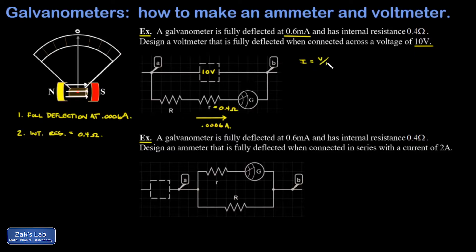I would end up with I equals V over R, just using Ohm's law, 10 volts over 0.4 ohms internal resistance. We'd end up pulling 25 amps of current through our galvanometer, and the thing would burn up.